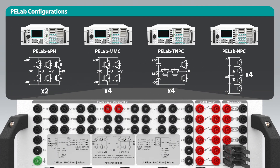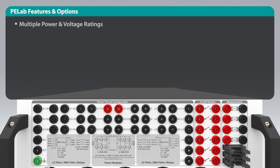The PE Lab can be ordered with multiple configurations and topologies, such as six-phase inverter, modular multilevel converter, TNPC, and NPC. You can also choose the power rating, voltage rating, and switching technology that best suits your application, such as IGBT, SiC, or MOSFET.